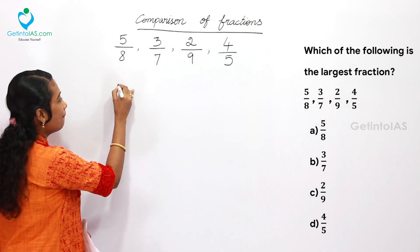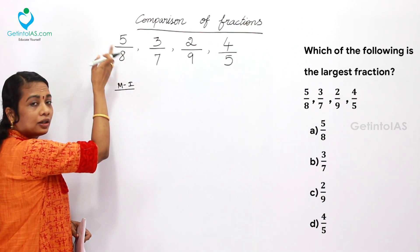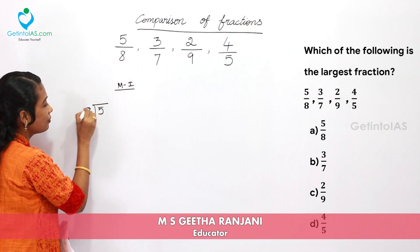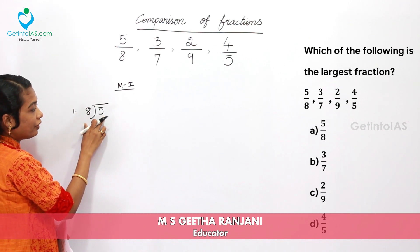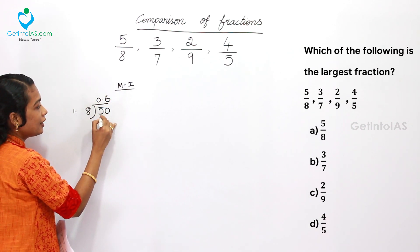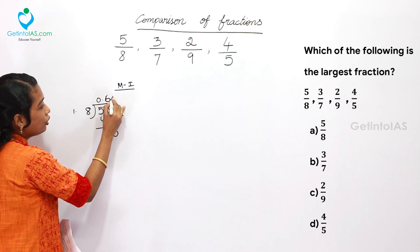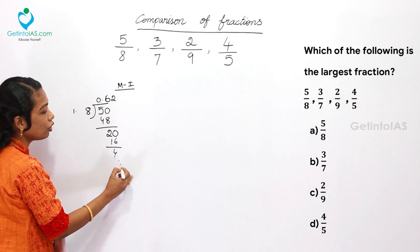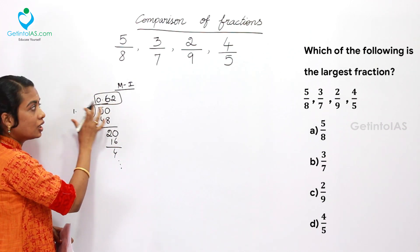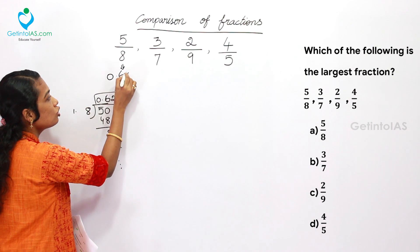Method 1: Under this method, you divide the numerator by the denominator. For 5/8: 8 divided into 5 gives 0 times, and including the decimal, 6 times 8 is 48, remainder 2. Then 2 times 8 is 16, and it goes on. We only require 2 digits after the decimal. So 5/8 is 0.62.